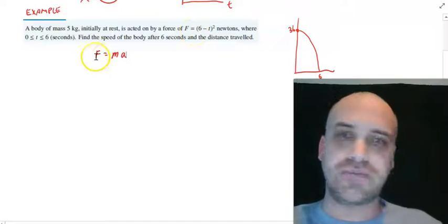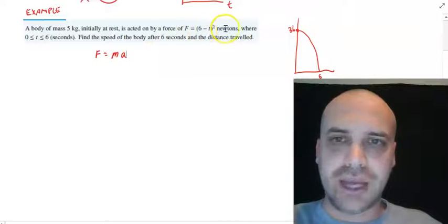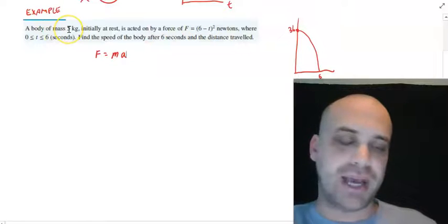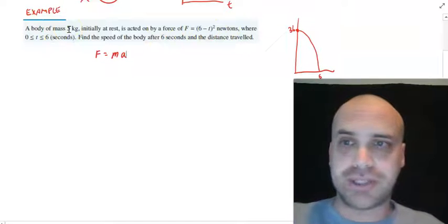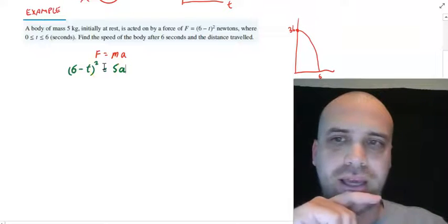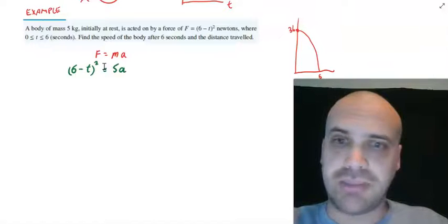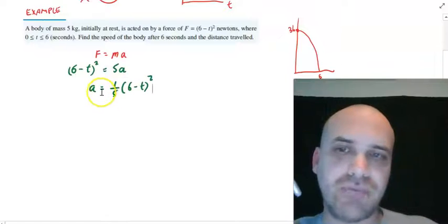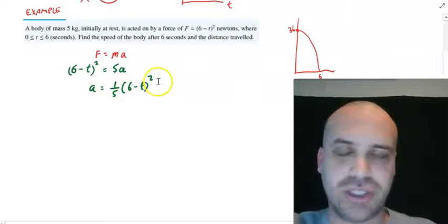So, super easy, force equals mass times acceleration and then let's sub in force and let's sub in the mass and we don't know what the acceleration is. Easy so far, 6 minus t all squared equals 5a. All right, let's just make that in terms of a. So, we have a function now for acceleration.